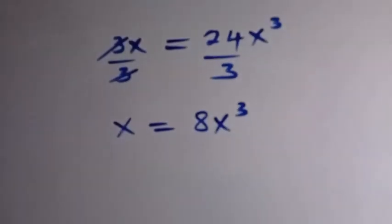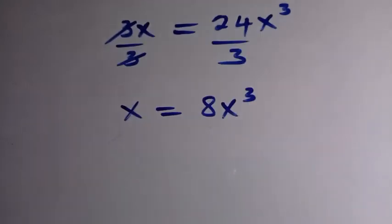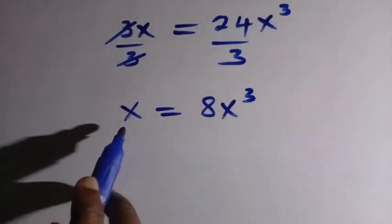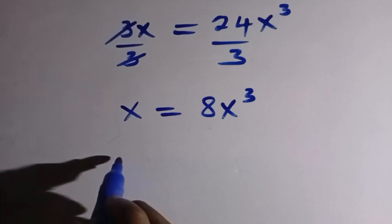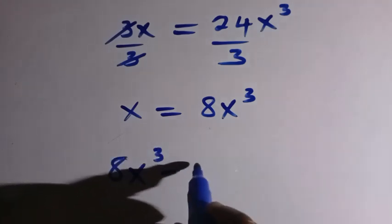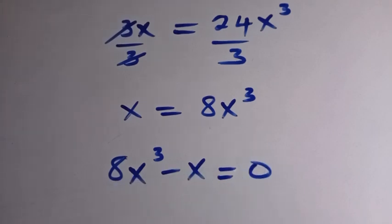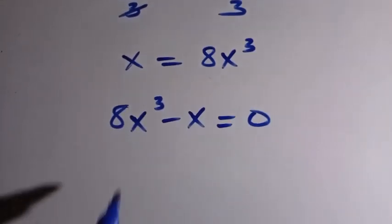So after having this, we proceed by taking x to the other side. We have 8x cubed minus x equals 0. Then, we can factor out x from here.